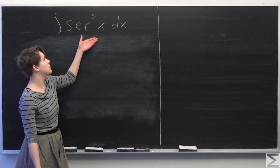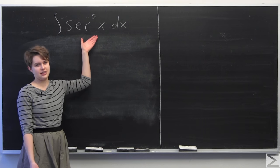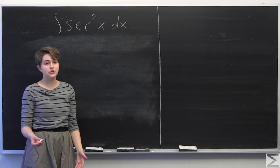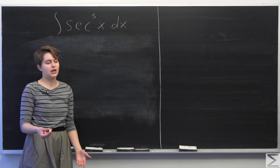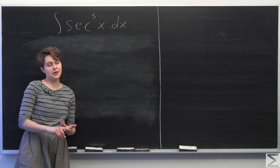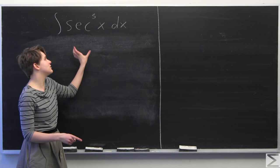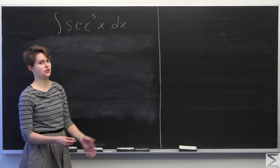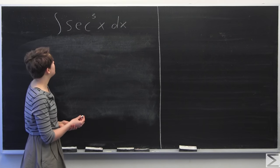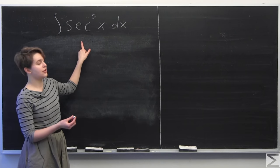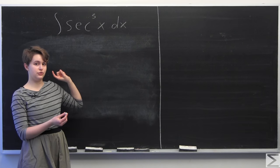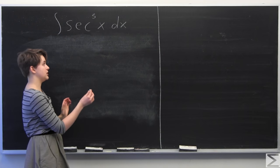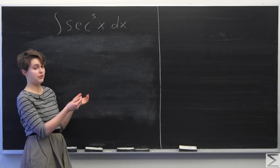We don't know any basic formula that will allow us to take the integral of secant cubed of x. So what we're going to do is use a couple of trigonometric identities and some clever tricks to solve this integral. Before I start, I'm going to write out one of the trig identities I'm going to use, which you will be familiar with.